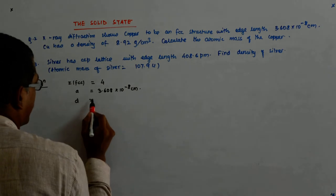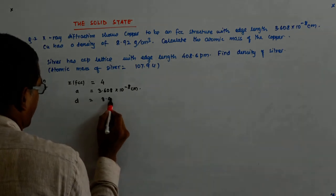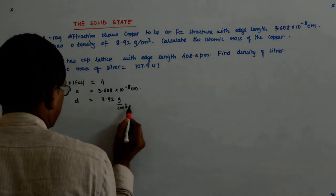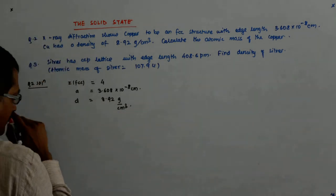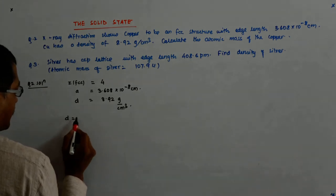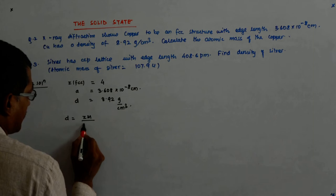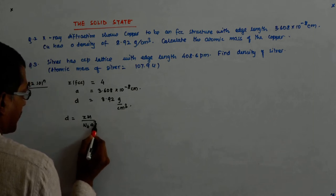D is equal to gram per centimeter cube. So, I know that D is equal to ZM upon NA A cube.